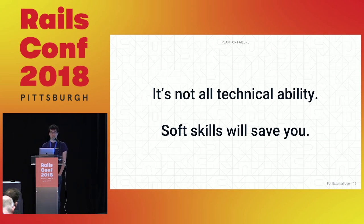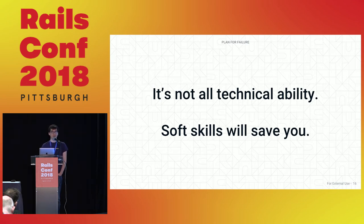When dealing with failure, it's not all technical ability — soft skills will definitely save you. As an anecdote, I once locked us out of an FTP vendor on a Friday night at 7 o'clock. I called up all the people at the vendor, tried to get in touch with the right people, apologized profusely. Being deferential and showing that I messed up and was willing to work with them to fix it — that soft skill saved us. Only an hour later we had the integration re-enabled. Soft skills will save you at every aspect of dealing with legacy vendors.